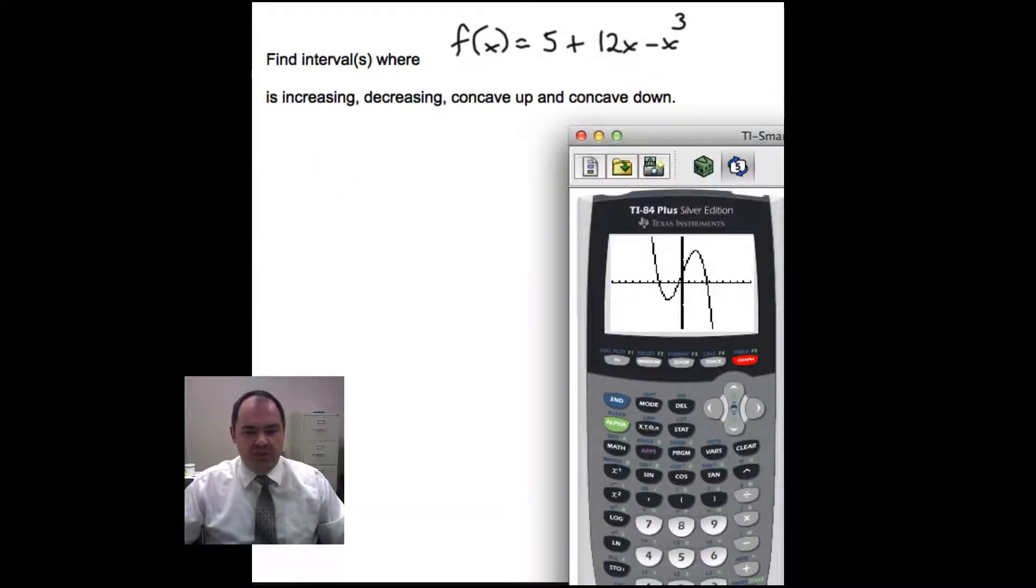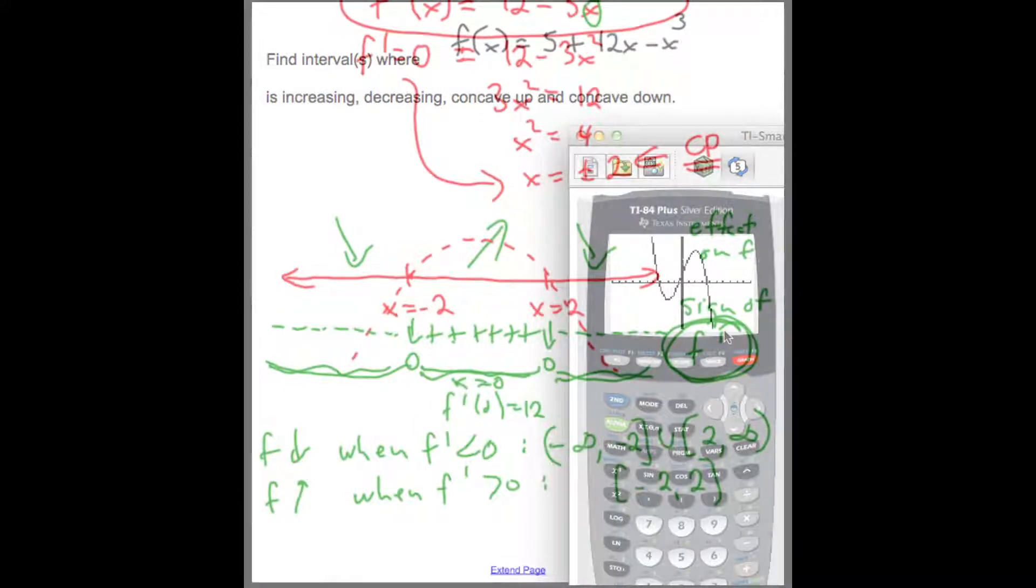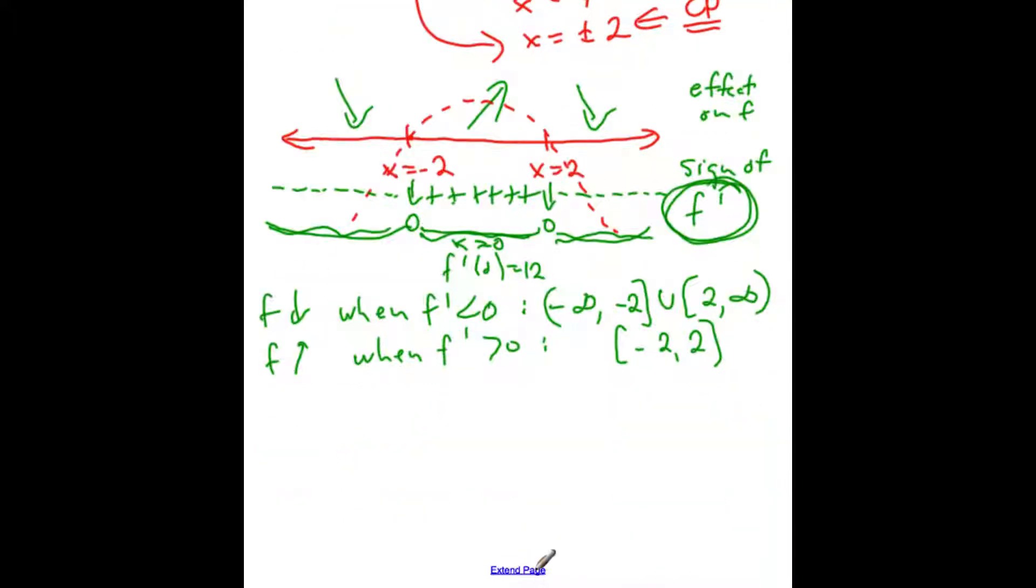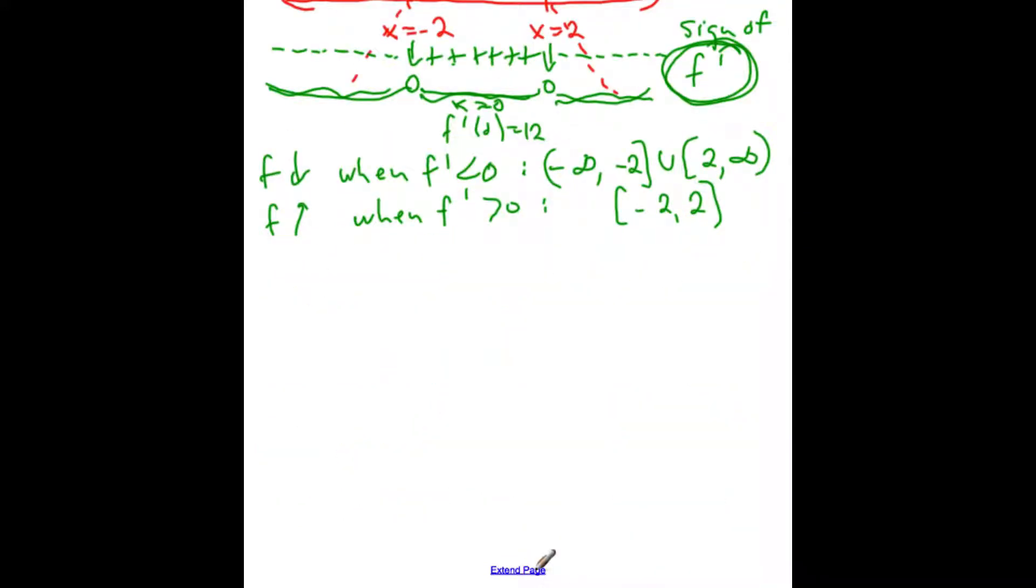Let's use what we've just talked about to analyze this function. This is a function we know. Recall that we analyzed where this function was increasing and decreasing in a recent video. Now we want to look at where this function is concave up and down. Let's look at concavity next. Concavity could change, might change, when the second derivative is zero.